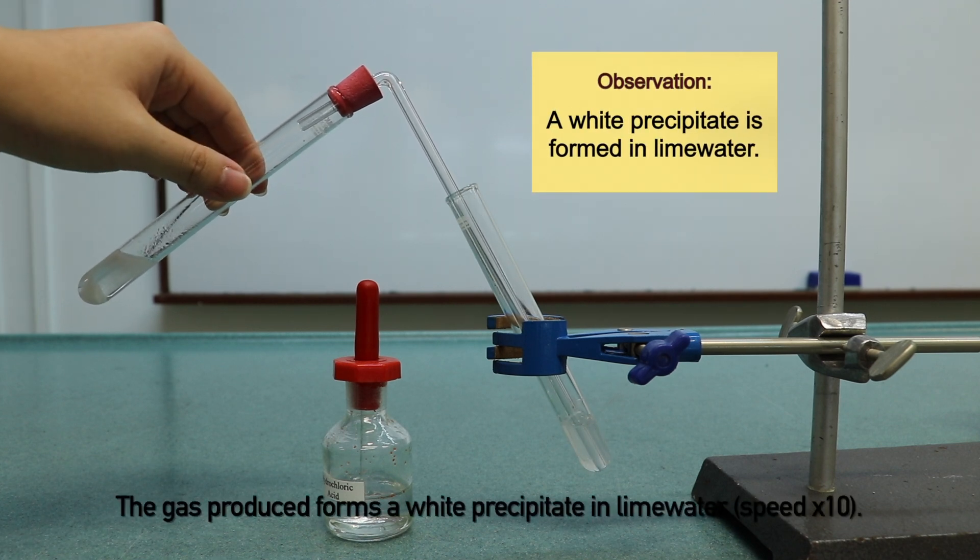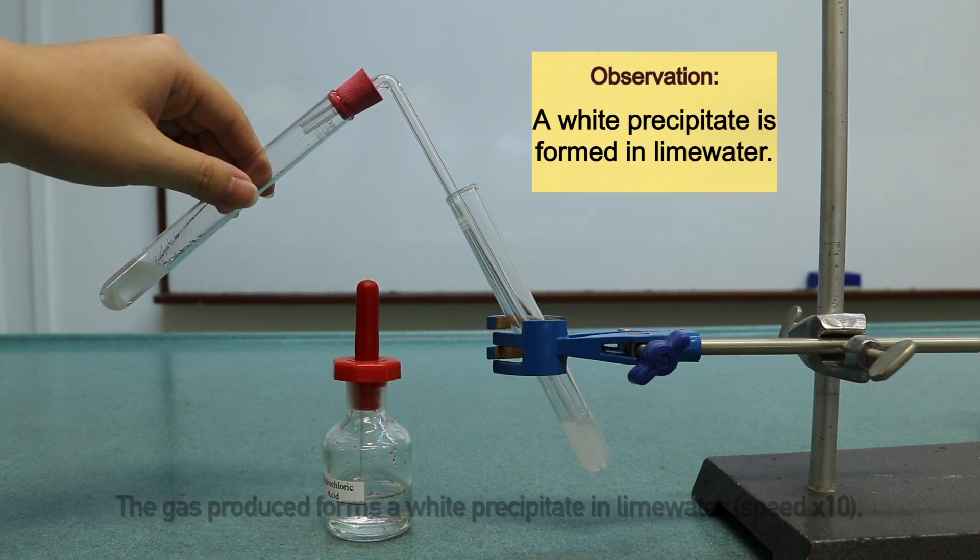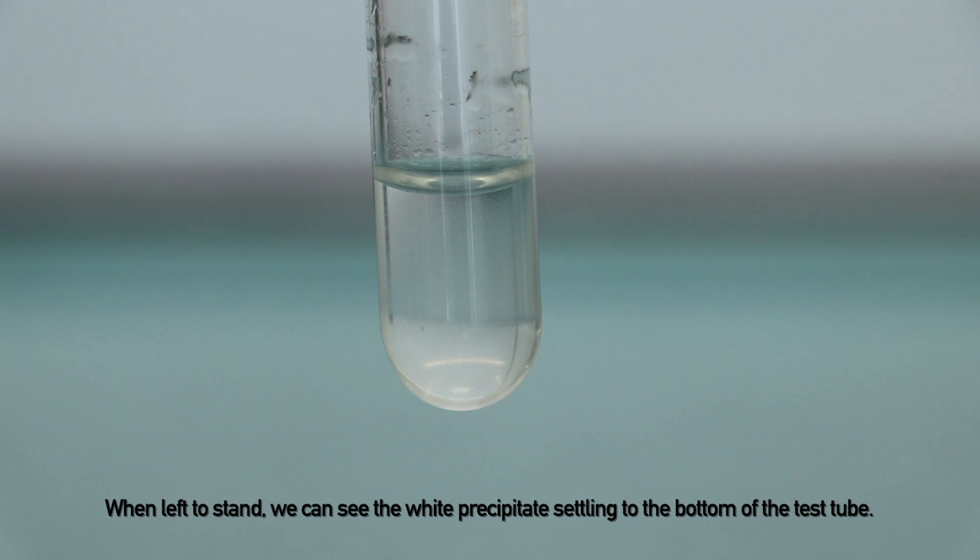The gas produced forms a white precipitate in lime water. When left to stand, we can see the white precipitate settling to the bottom of the test tube.